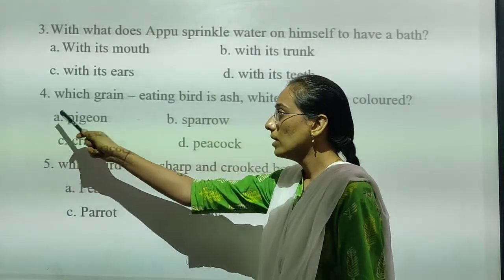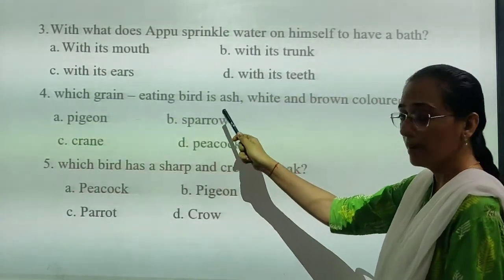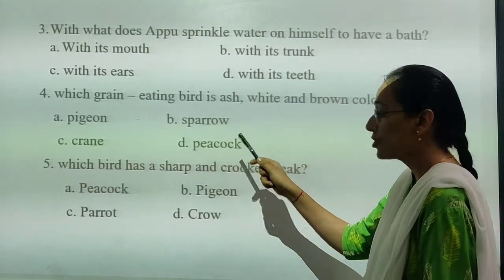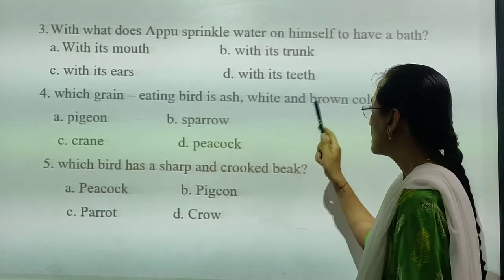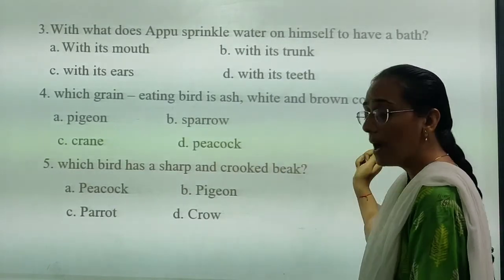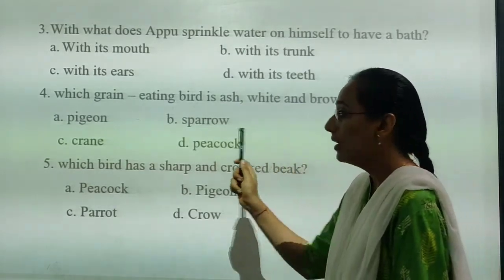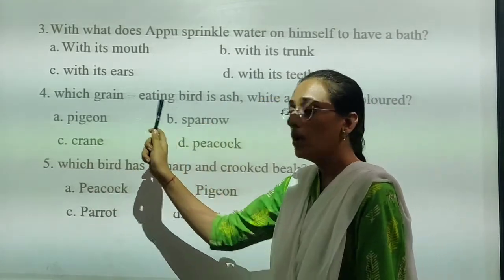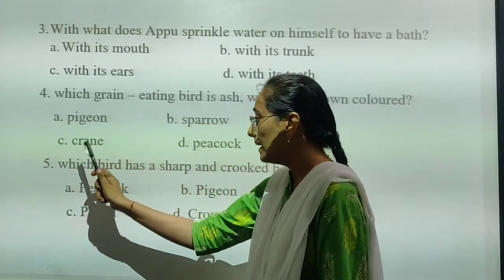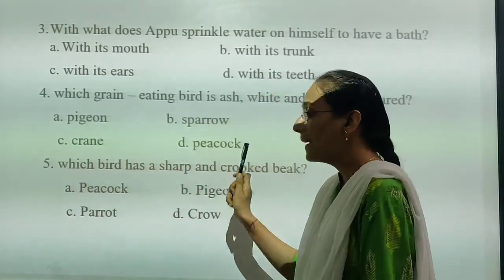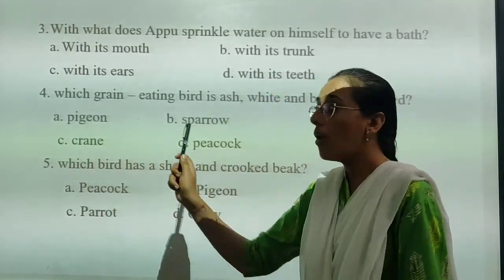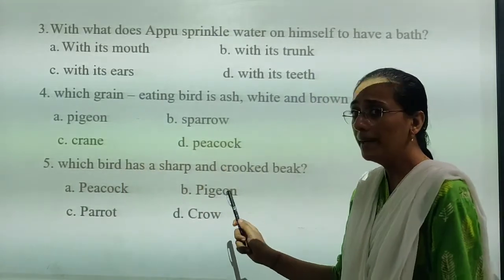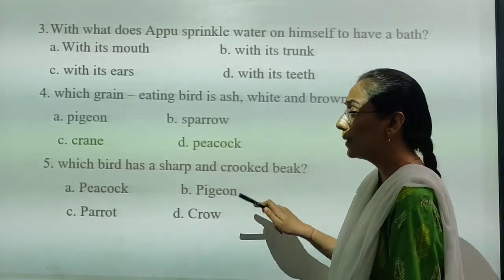Fourth: which grain-eating bird is ash, white and brown in color? The options are: pigeon, sparrow, crane, peacock, or pond heron. It is a bird — you have to write the right answer.